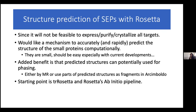To predict the structures of these things, I chose to use Rosetta. Obviously it's not feasible to express, purify, and crystallize all of these. I wanted to use prediction as a second step to: one, get a function, and two, figure out if any of these are related. If they're related, we can classify them into families and then choose representative targets from each family to validate the predictions.